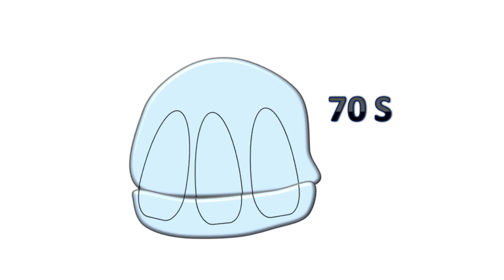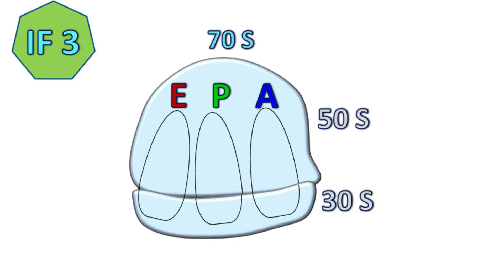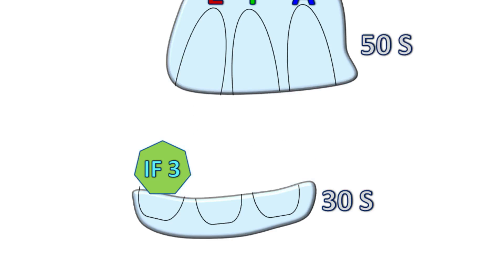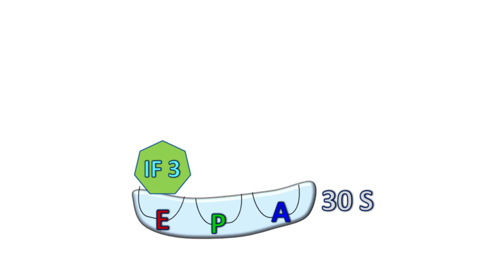In the first step of initiation, the initiation factor IF3 binds to the 30s subunit of the ribosome. The binding of IF3 disassociates the 70s ribosome into 30s and 50s subunit.